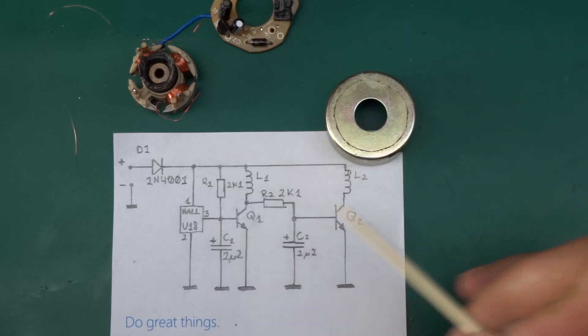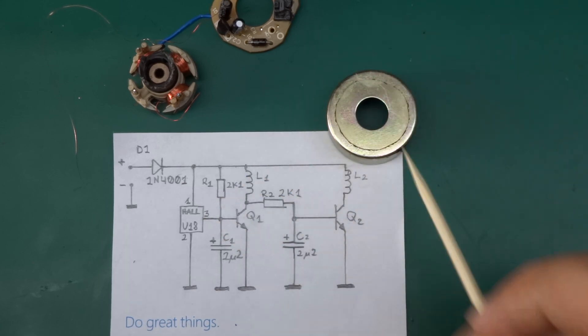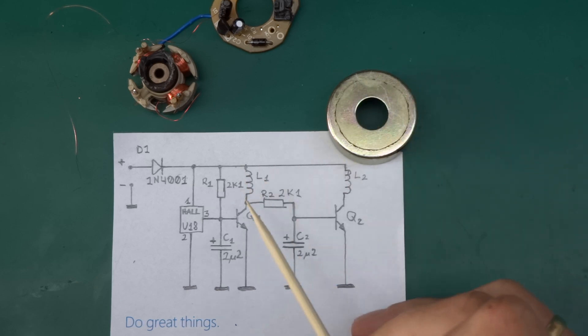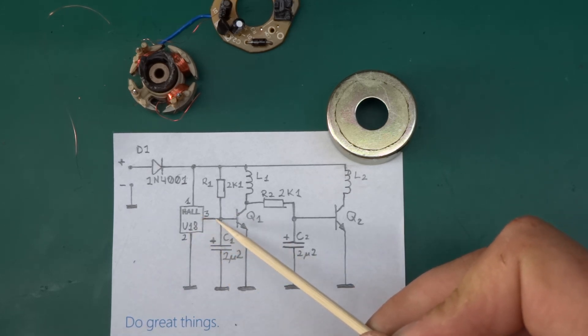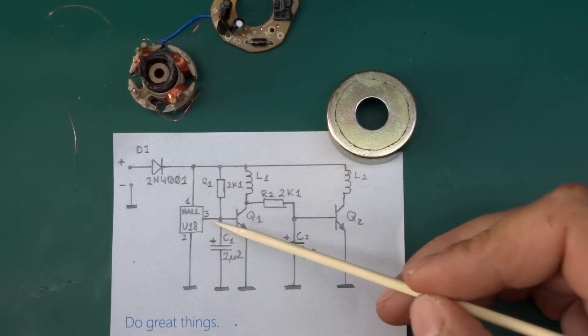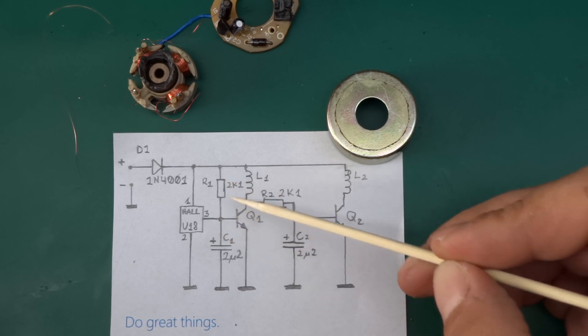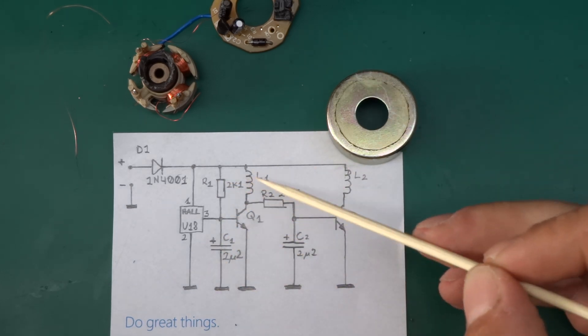Now when it reaches the point when the poles align, the Hall effect sensor has got a different pole facing it, so it will latch to the opposite side and pull it high.